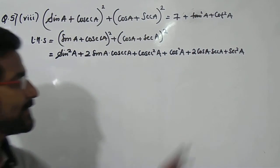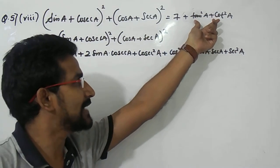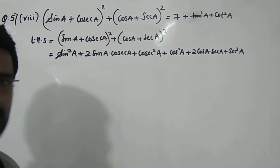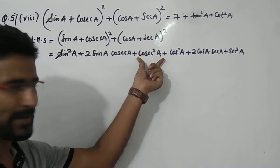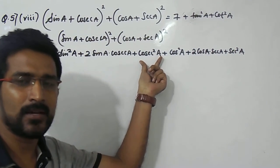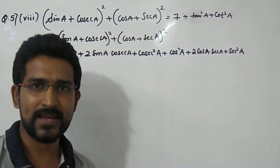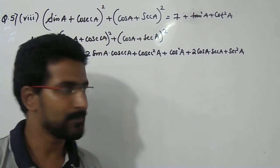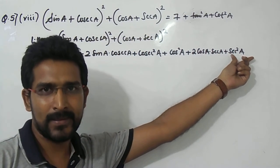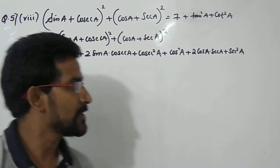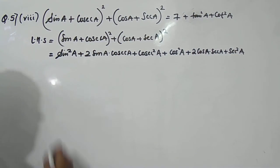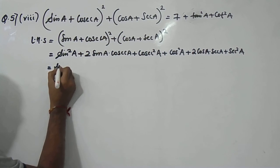Now in the right-hand side we want terms tan²a and cot²a. So sin²a + cos²a will become 1, because sin²θ + cos²θ = 1. We have also learned that cosec²a = 1 + cot²a, so in place of cosec²a we can write 1 + cot²a. Similarly, sec²a = 1 + tan²a. Using these identities we can replace the squared terms to get expressions in tan and cot. First, we write sin²a and cos²a together.